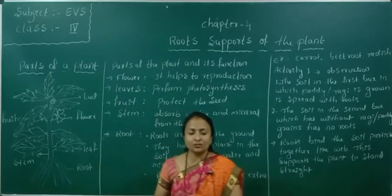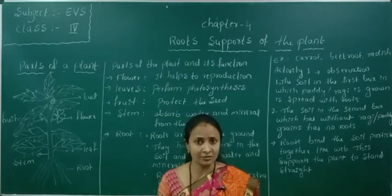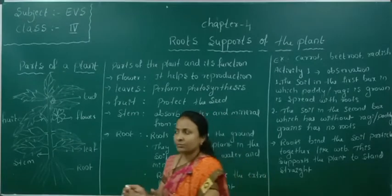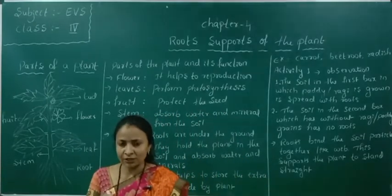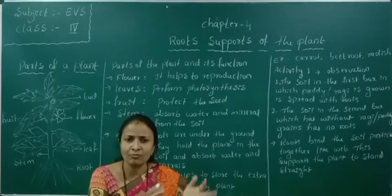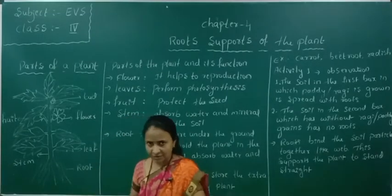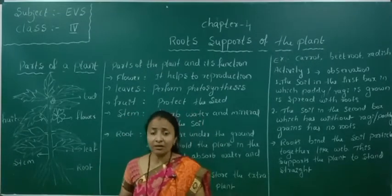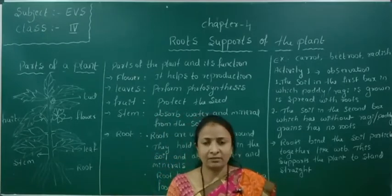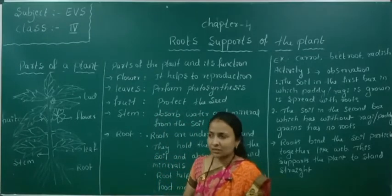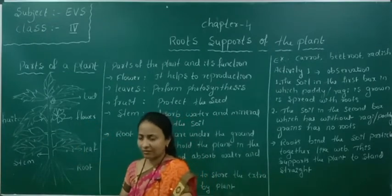Flowers — you know there are different types of flowers with different colors. Each different type of plant has a different type of flower. It may be blue, red, white, or pink. These are all different types of flowers.